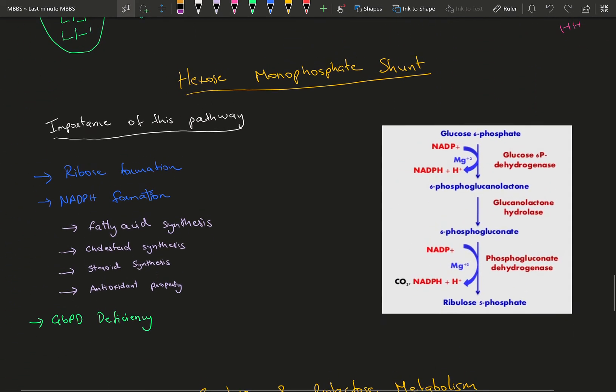Moving on to hexose monophosphate shunt. This is basically a link between glucose and nucleotide synthesis. What's going to be formed is ribulose, or more so ribose. It's going to help in ribose formation which is a 5-carbon compound. That is the first thing you need to know about HMP pathway.